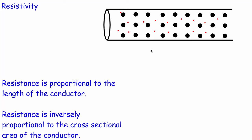Hello and welcome to this video on resistivity and superconductivity. We're going to look at how the size of a conductor affects its resistance. Here we've got a conductor — imagine it's a copper wire with positive ions and red dots representing free electrons. When we connect a source of potential difference, these electrons start to move in a certain direction and form our current. As electrons travel through, these ions potentially get in the way, and that's what causes our resistance.